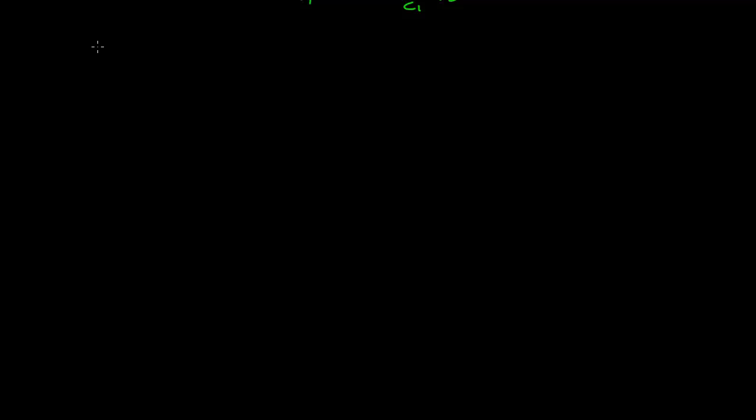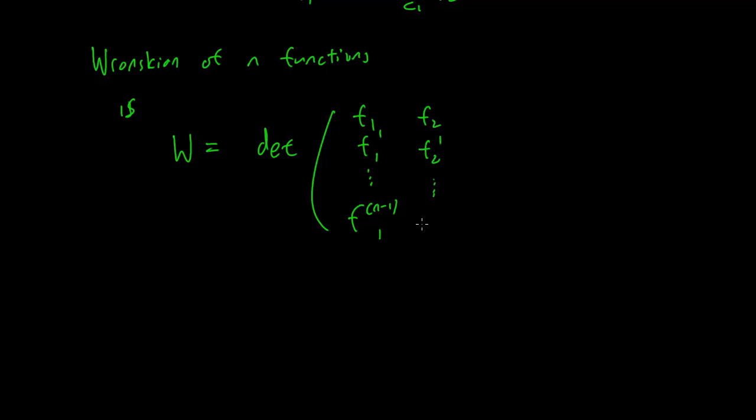So the Wronskian of n functions is the determinant of this matrix: f1, f1 prime until f1 to the (n-1); f2, f2 prime until f2 to the (n-1); and so on. We have fn, fn prime, fn to the (n-1). So you have to take a determinant of a big matrix.